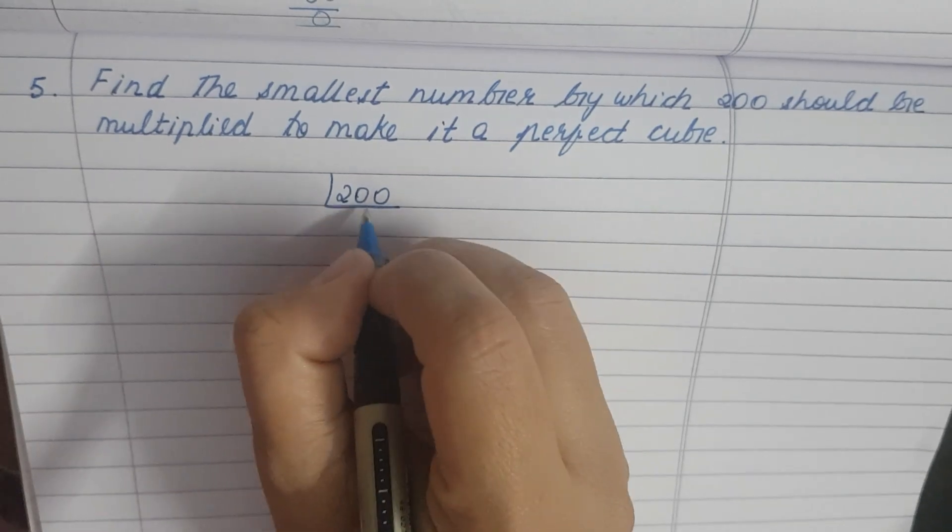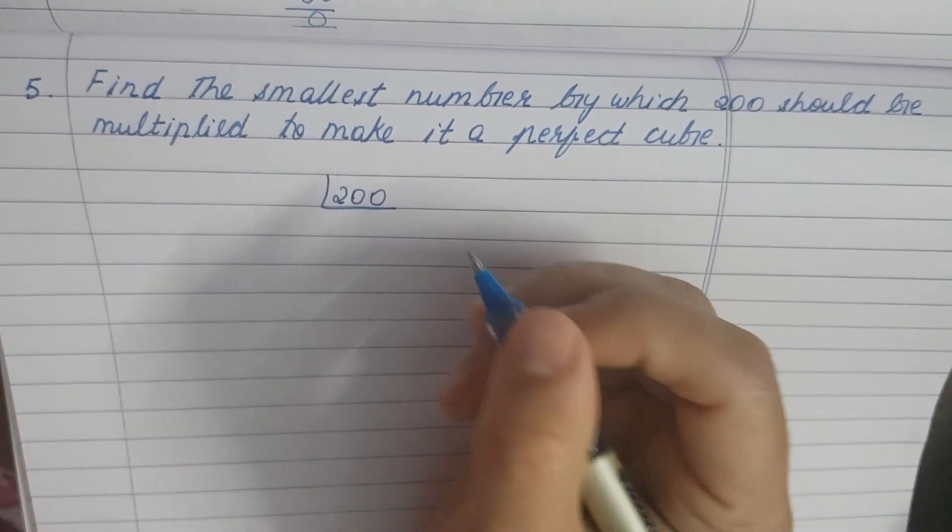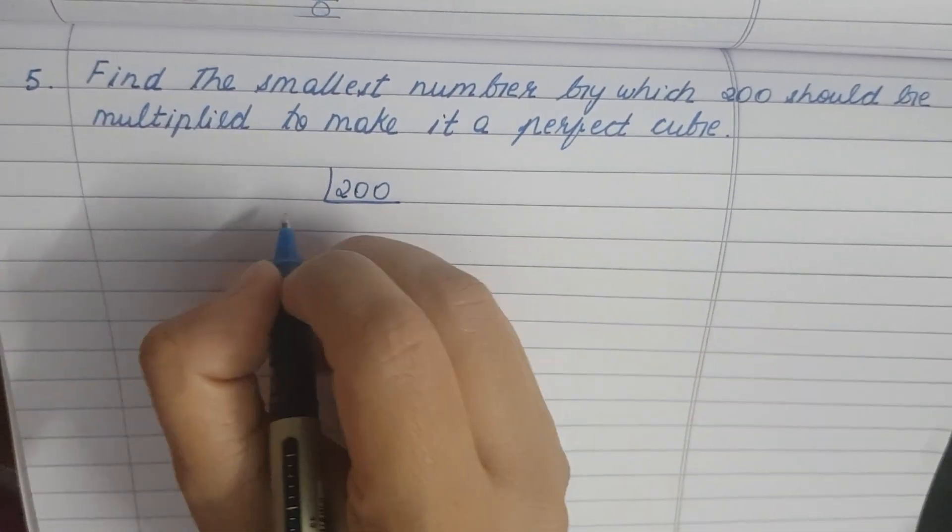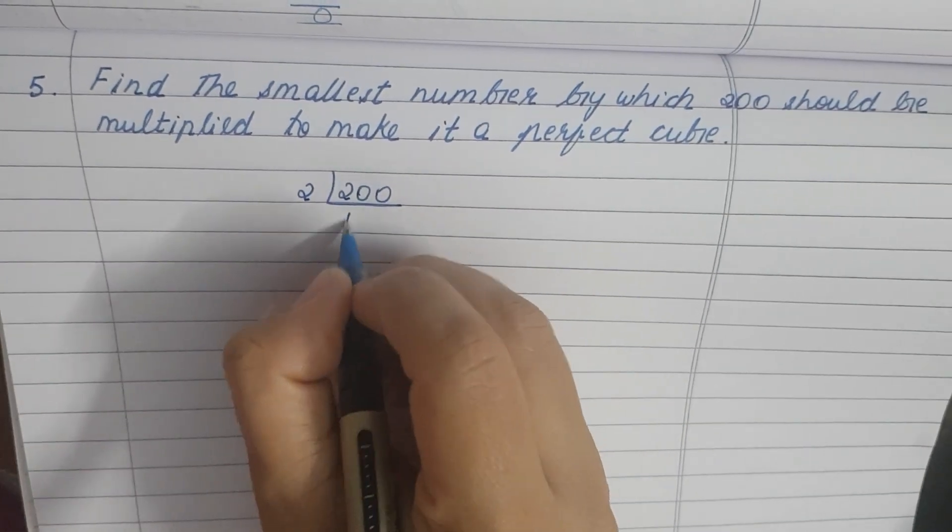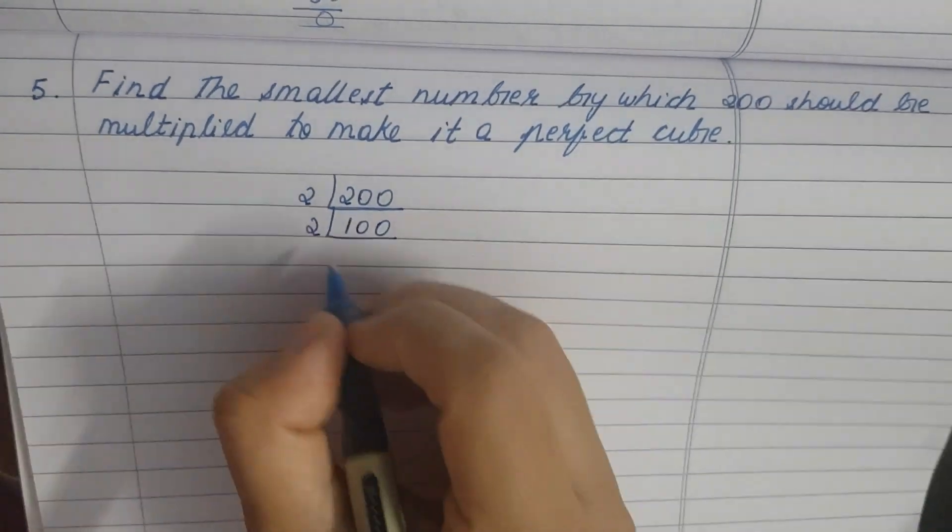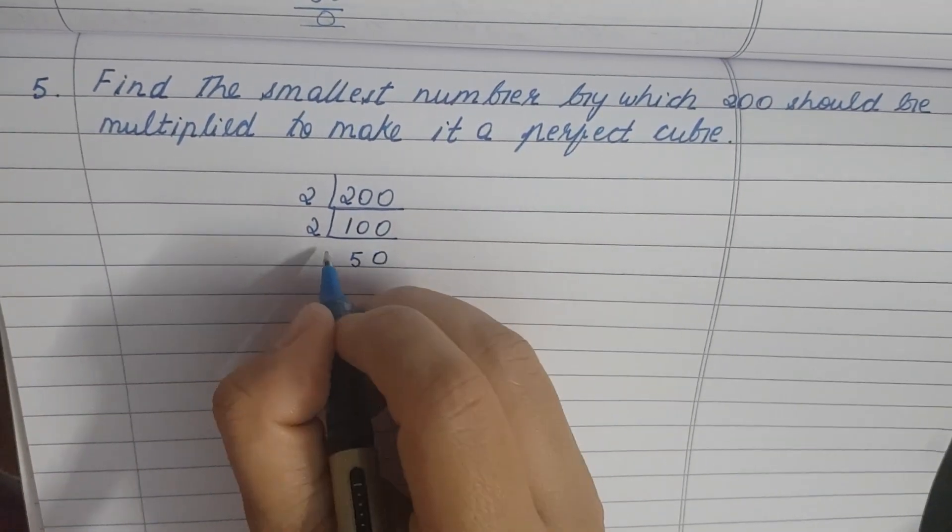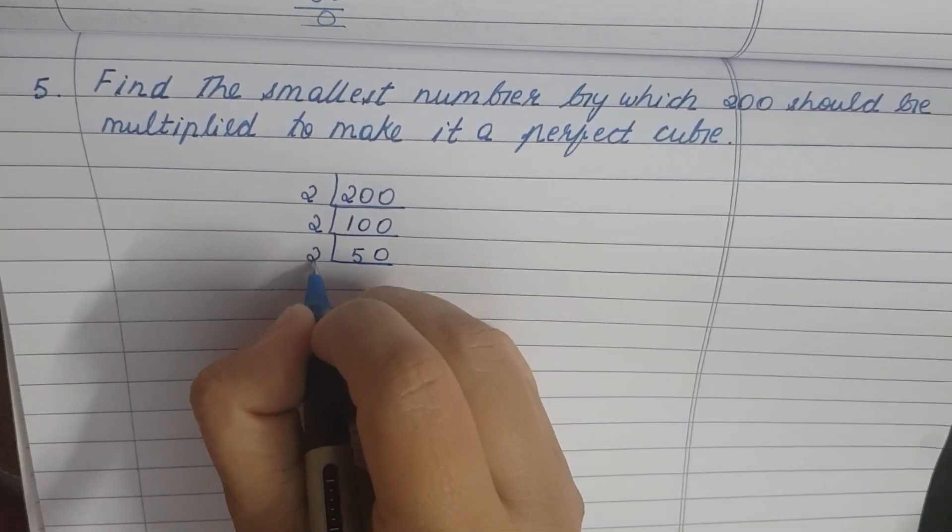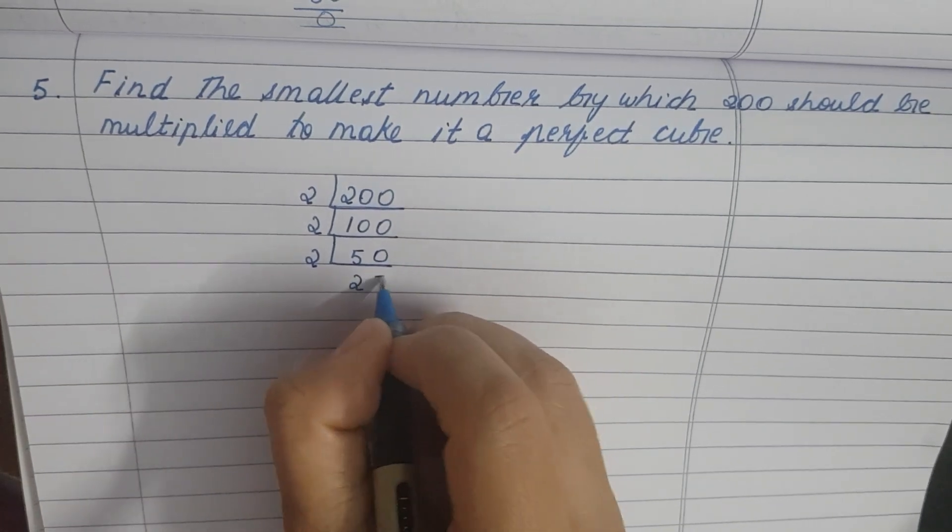We will do 200 and 2, so I am doing it with 2. 100, again 2, 50. Again 2, 25.